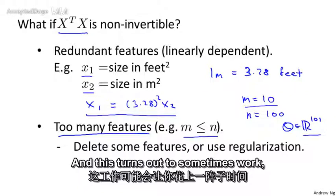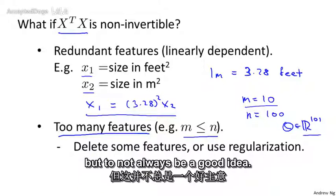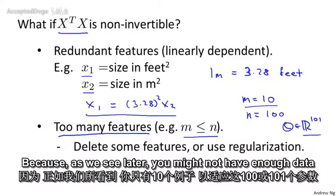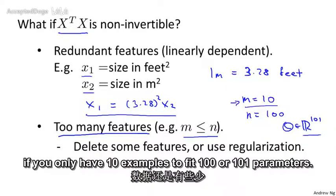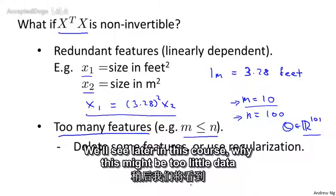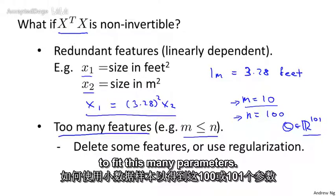And this turns out to sometimes work, but to not always be a good idea, because as we'll see later, you might not have enough data if you have only 10 examples to fit 100 or 101 parameters. We'll see later in this course why this might be too little data to fit this many parameters.